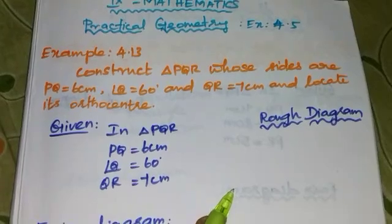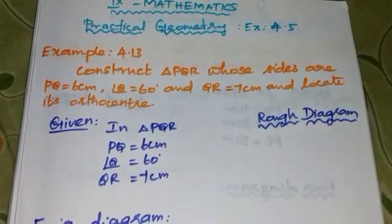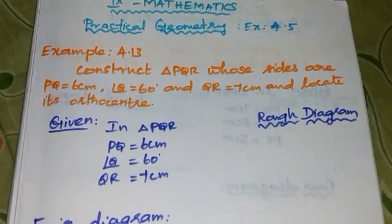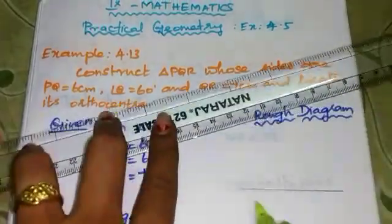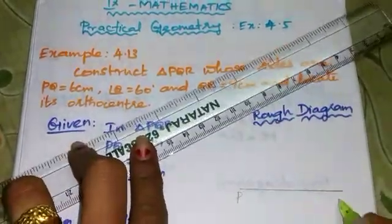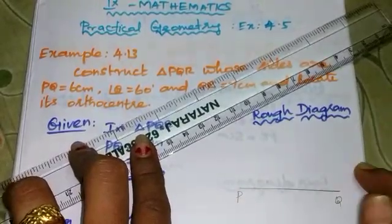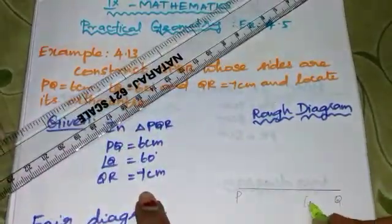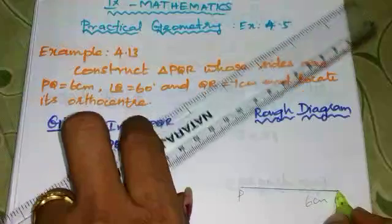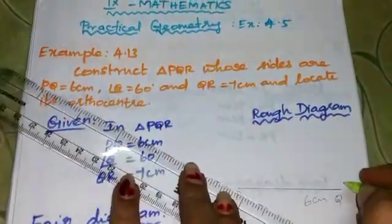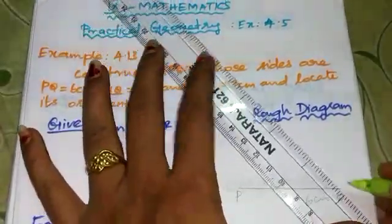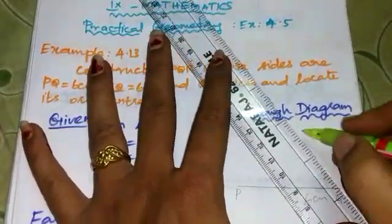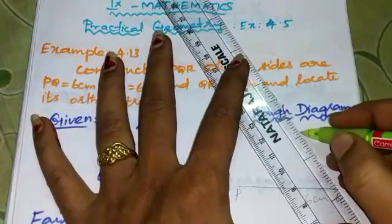Let's draw a rough diagram first. It's a triangle PQR. We choose our points anti-clockwise. PQ is 6cm, angle Q is 60 degrees — which is an acute angle. QR is 7cm. Since 60 degrees is an acute angle, all angles are acute angles.